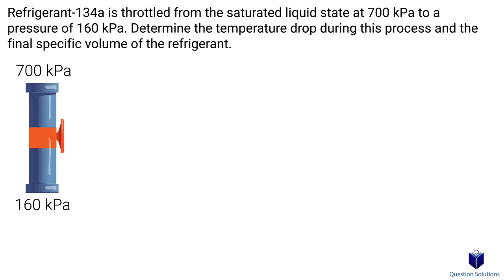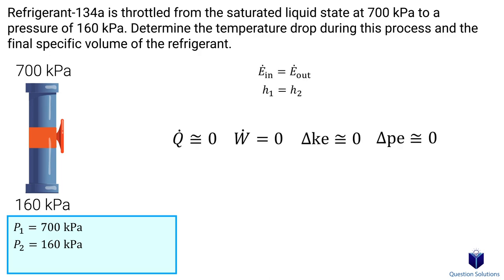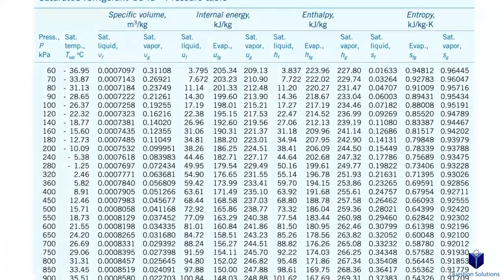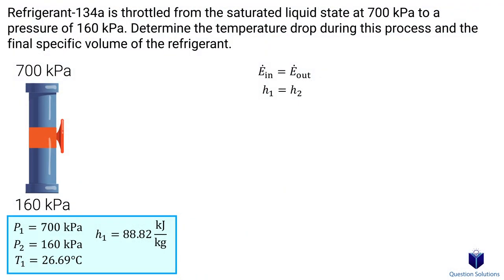In this example, we have refrigerant 134a being throttled, and we need to figure out the temperature drop during this process and the final specific volume. The initial pressure is 700 kilopascals and the final pressure is 160 kilopascals. Since this is a throttling valve, kinetic energy, potential energy, and work interactions are all negligible. We can figure out the initial enthalpy and initial temperature using a refrigerant table at 700 kilopascals. Since we're told it's a saturated liquid, the saturation enthalpy and saturation temperature at the inlet are read directly from the table.